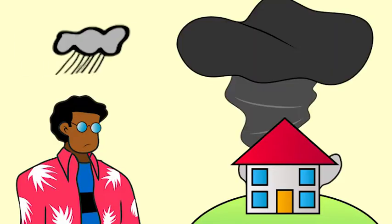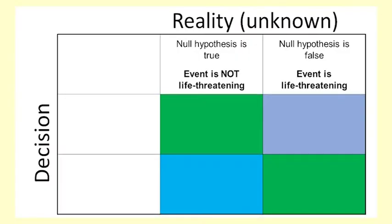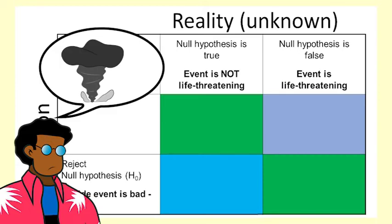In weather warning, forecasters need to make decisions about upcoming weather events. The null hypothesis is that the event will not be life threatening. The forecaster gets evidence of a life threatening weather event. From the evidence, they decide to reject the null hypothesis and send out a warning, saying that it is life threatening.